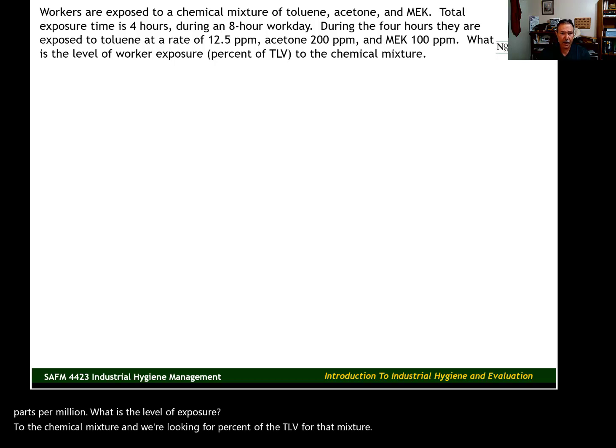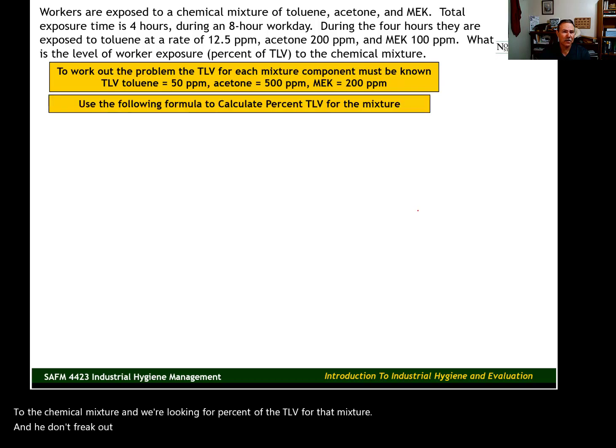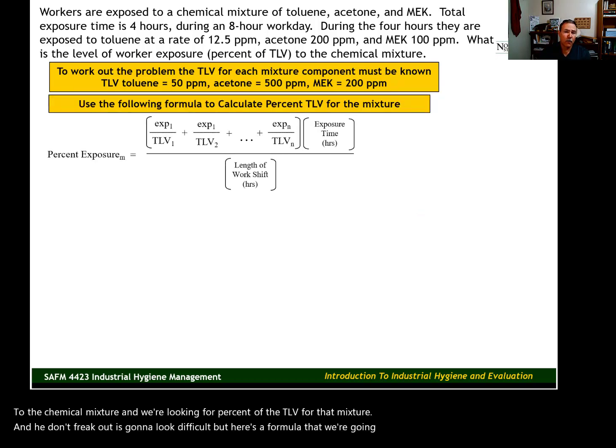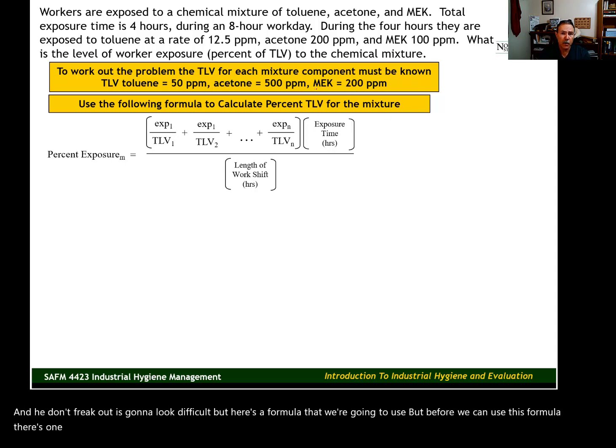Here's the formula that we're going to use. Don't freak out—it's going to look difficult. But before we can use this formula, there's one other piece of information we need: the TLV for each of the mixture components. We need the TLV for toluene, acetone, and MEK, and I have those listed here.